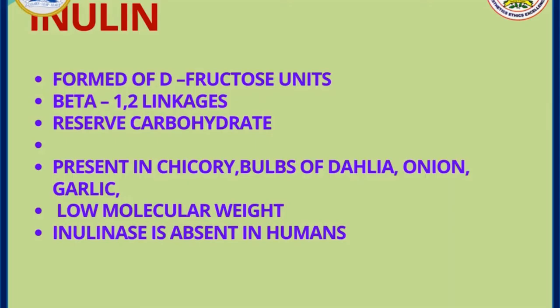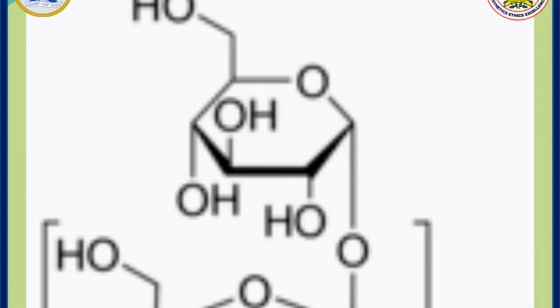Inulin is a homopolysaccharide of fructose — that is, it is a fructan — which is present in chicory, bulb of dahlia, onion, and garlic. It is a low molecular weight polysaccharide. As inulinase is absent in humans, we cannot digest inulin. It is formed of beta-1,2 linkages. Here we can see the structure of inulin, where the fructose molecules are linked by beta-1,2 linkages.